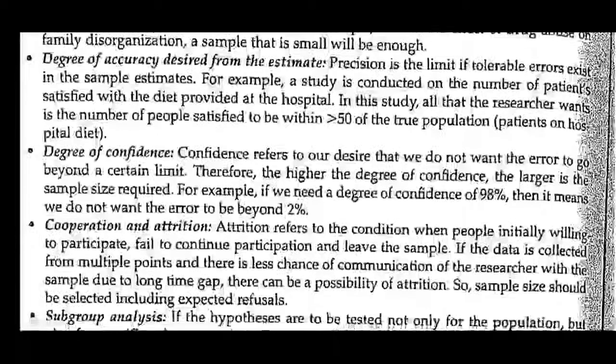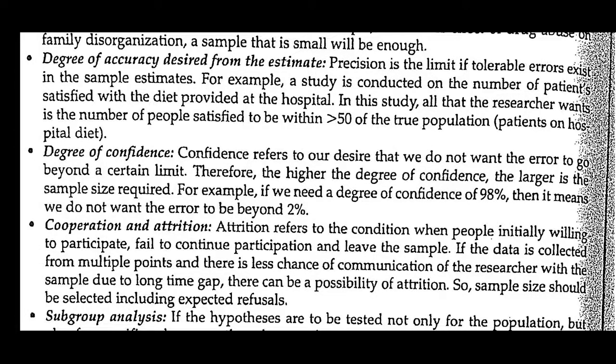The next factor is the degree of accuracy desired from the estimate. Precision is the limit of tolerable errors in the sample estimate. For example, a study conducted on the number of patients satisfied with the diet provided at the hospital — the researcher wants the number of satisfied patients to be within above 50% of the true population. If the sample size is not adequate, the research study will not be effective.